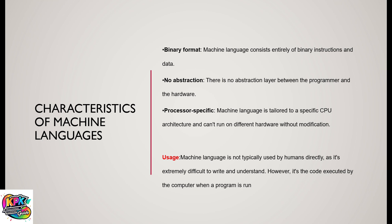Characteristics of machine language: First, it has binary format — machine language consists entirely of binary instructions and data. Second, there is no abstraction — there is no abstraction layer between the programmer and the hardware. It goes straight to the machine with no intermediary between them.